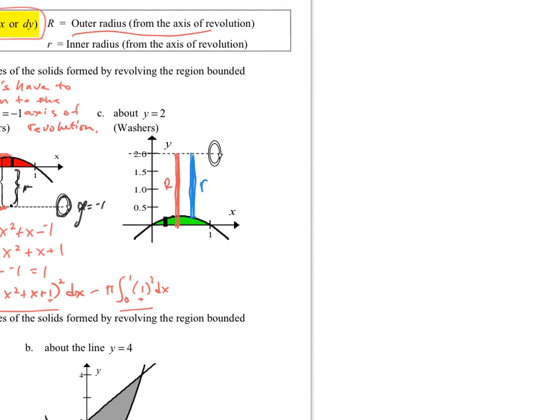And so if I set these up, I can see that big r is equal to two and then little r is equal to two minus my curve. So that's my negative x squared plus x.